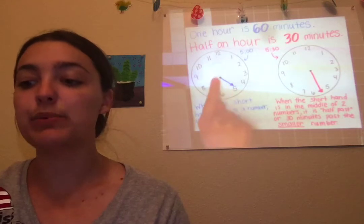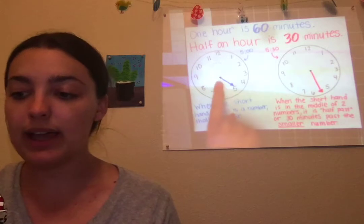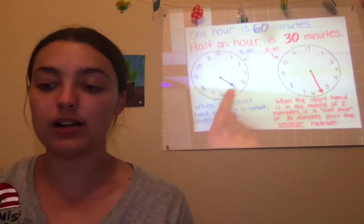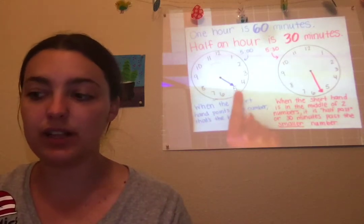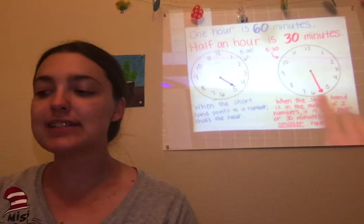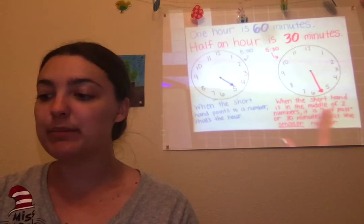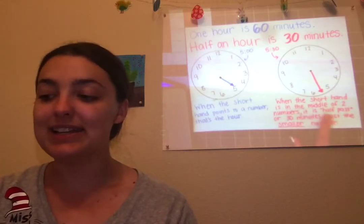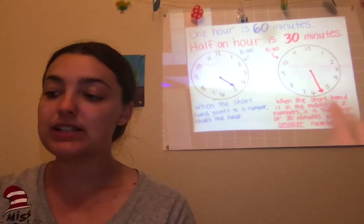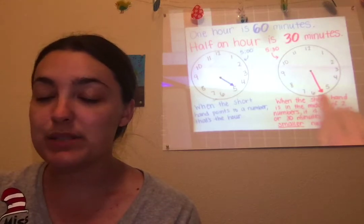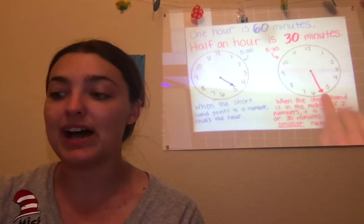When the shorthand is pointing right to a number, like pointing to the five, that means it's five o'clock. Shorthand on the five means five o'clock. But if the shorthand is kind of in between two numbers, like between the five and the six, when the shorthand is in the middle of two numbers, it is half past — or 30 minutes past — the smaller number. So if it's between five and six, five is the smaller number, so it's 5:30.